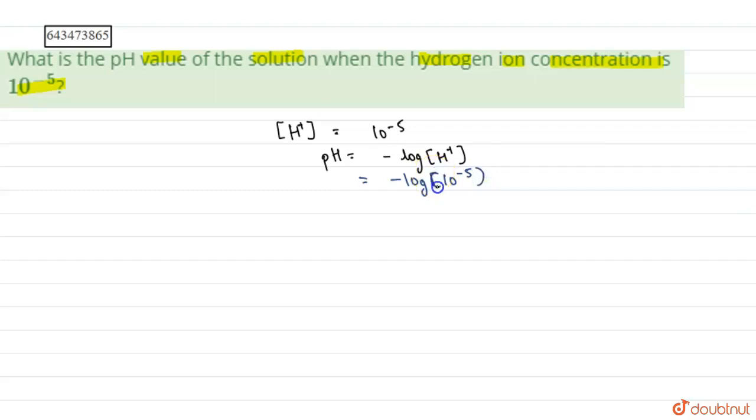Now log has a property: log of a to the power b can be written as b times log a.